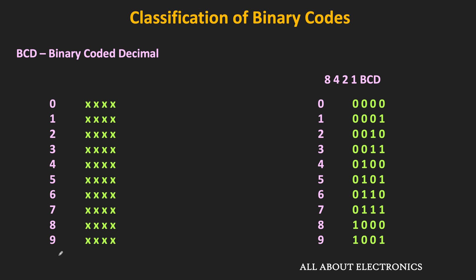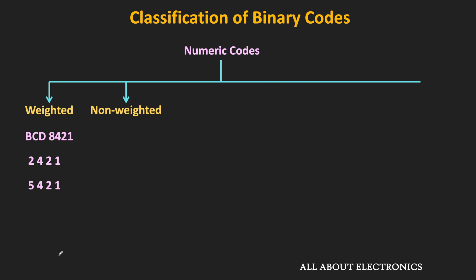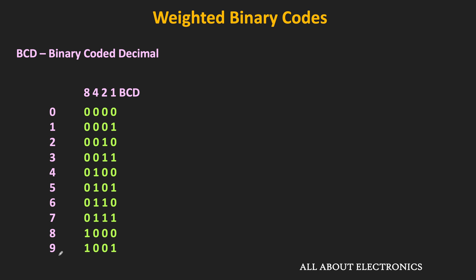The 8421 is a weighted code. In general, numeric codes can be classified as either weighted codes or non-weighted codes. BCD 8421, 2421, and 5421 are a few examples of weighted codes. Weighted codes are the ones which obey the positional weighting principle, meaning that each position in the number has some specific weight. For example, in the 8421 BCD code, starting from the MSB, the weight of each bit is 8, 4, 2, and 1 respectively.